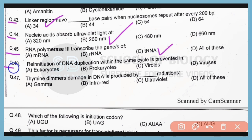Question number 46. Reinitiation of DNA duplication within the same cycle is prevented in eukaryotes. So correct answer is option A.